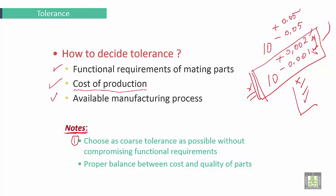There are notes. The first one: choose as coarse a tolerance as possible without compromising functional requirements. We must choose the tolerance balancing cost with the quality of parts without an effect on quality and on the quality of parts.